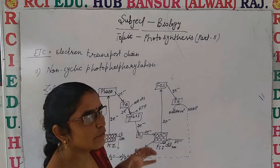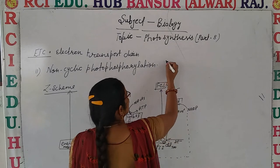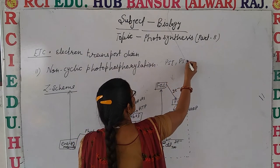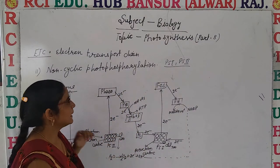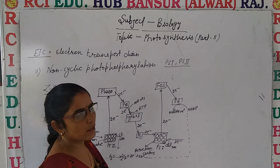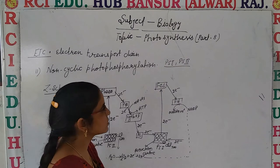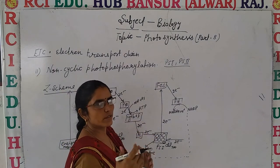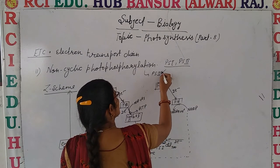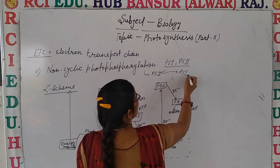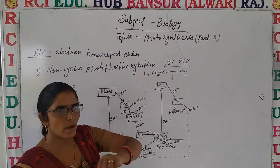One thing to remember: in cyclic photophosphorylation, only Photosystem I (PS1) takes part. Whereas in non-cyclic photophosphorylation, both PS1 and PS2 participate. Also, in cyclic photophosphorylation, the electrons released come back to the same photosystem — hence it is called cyclic. In non-cyclic photophosphorylation, the electrons do not return, hence it is called non-cyclic.